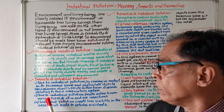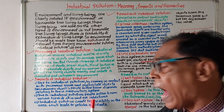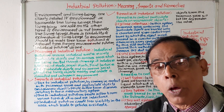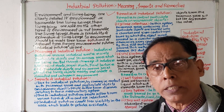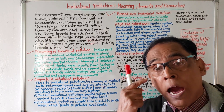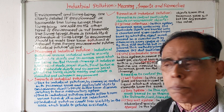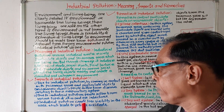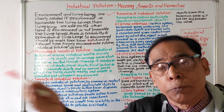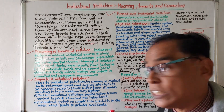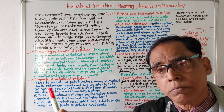Number two: due to industrial pollution, people suffer from various types of skin as well as eye infections. Another impact is that industrial pollution creates low visibility — people cannot see clearly ahead of them. Due to low visibility, it leads to accidents, mainly vehicle accidents.